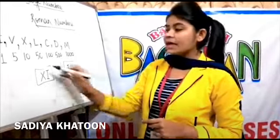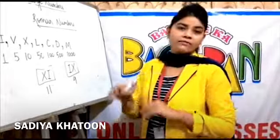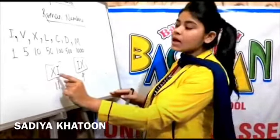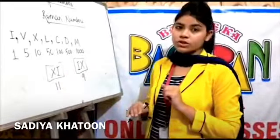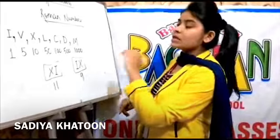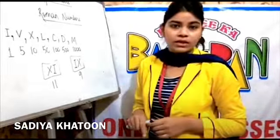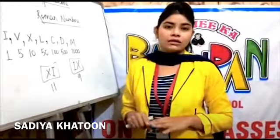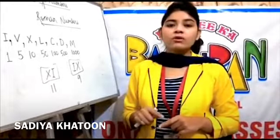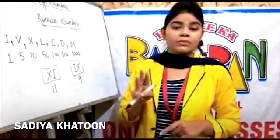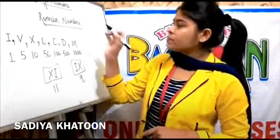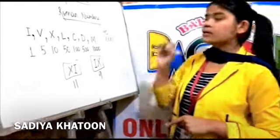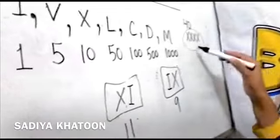Do remember one thing while writing on the right and left. The most important rule is that the maximum number of times you can repeat any of these alphabets is only three times. You cannot write the same symbol more than three times. For example, if you need to write 40, you cannot write X four times (10+10+10+10) — that is wrong.